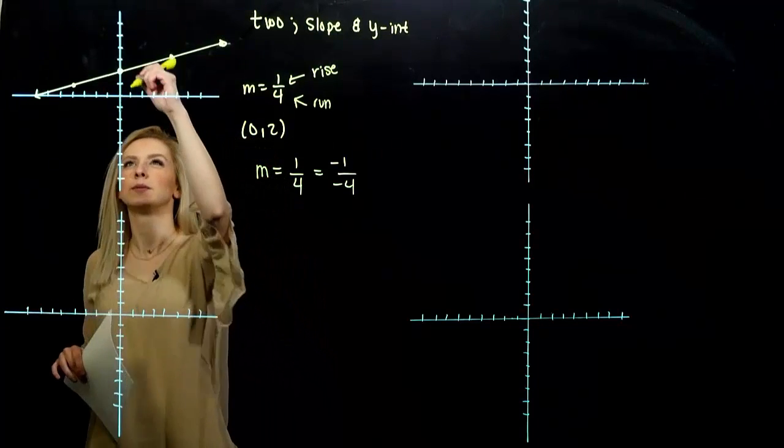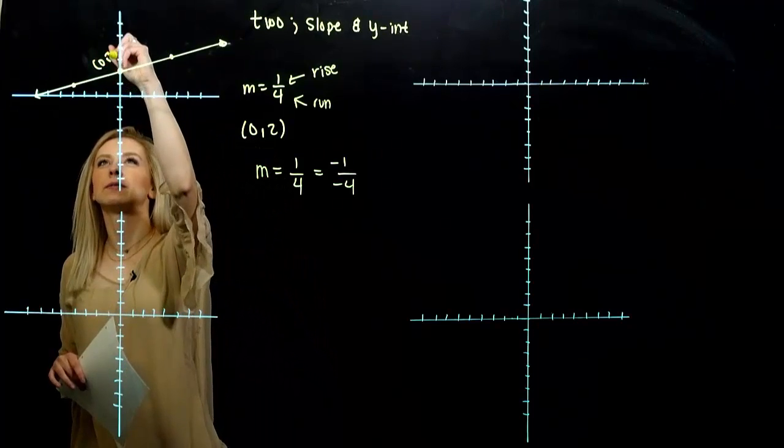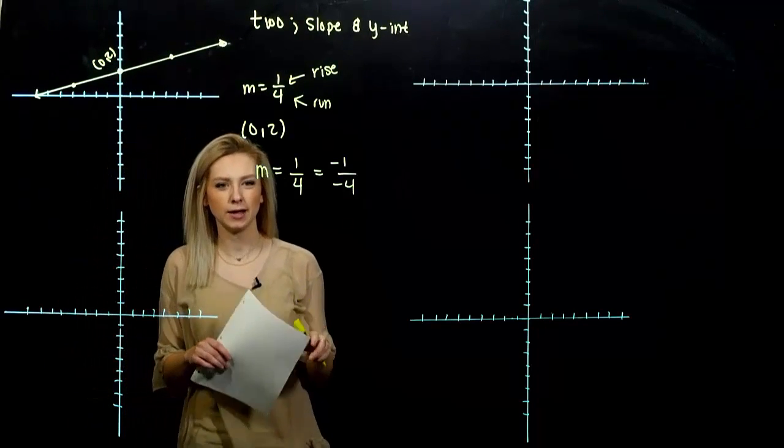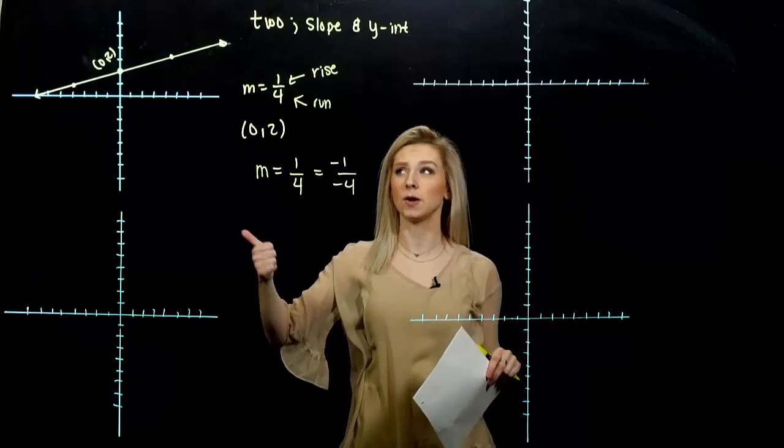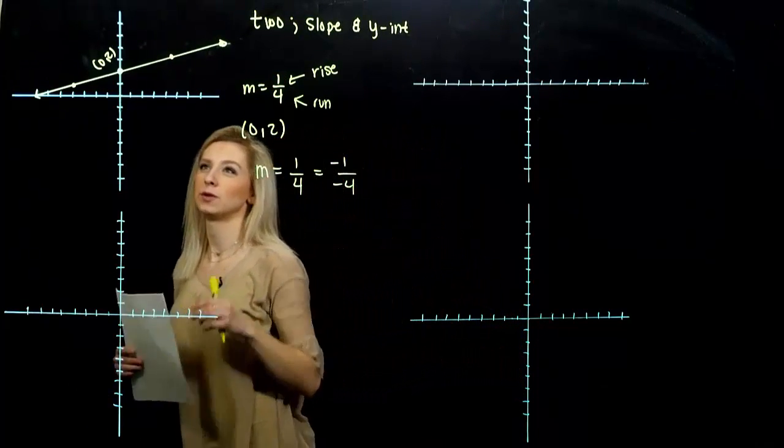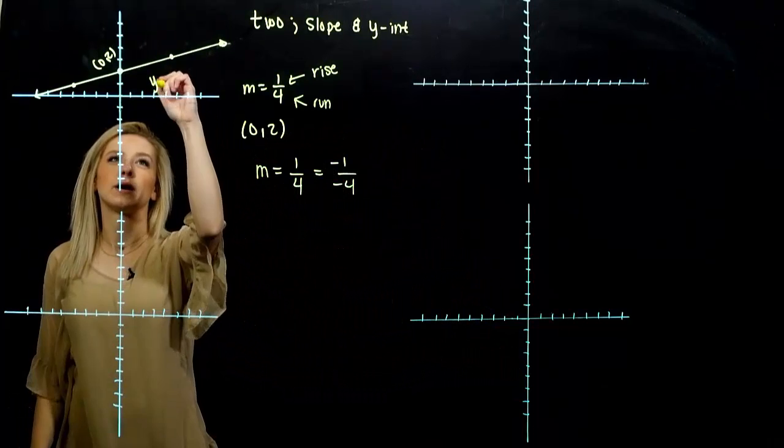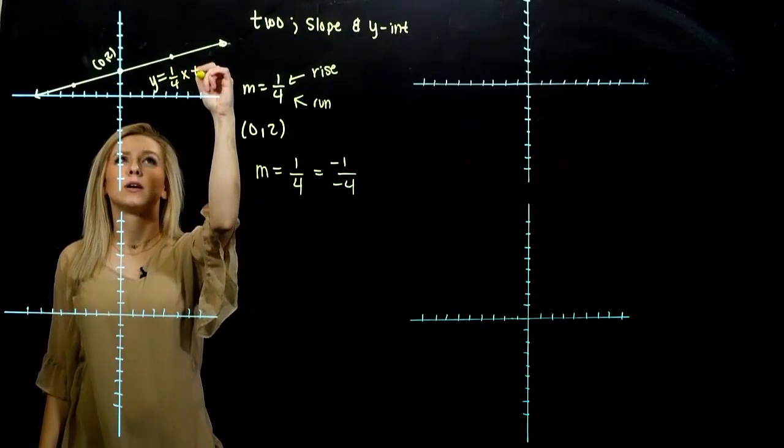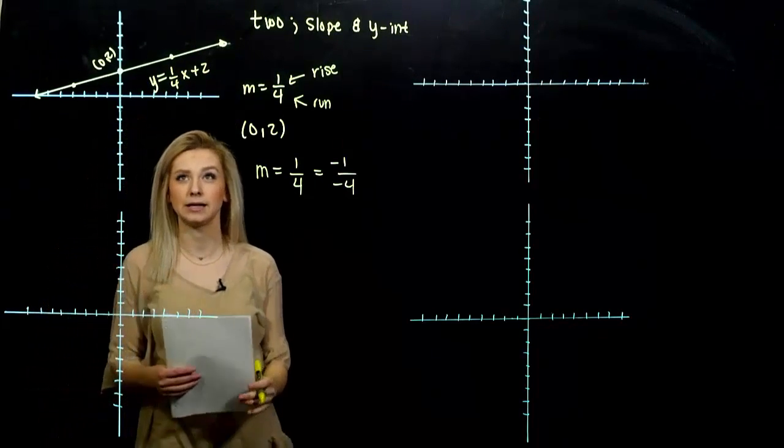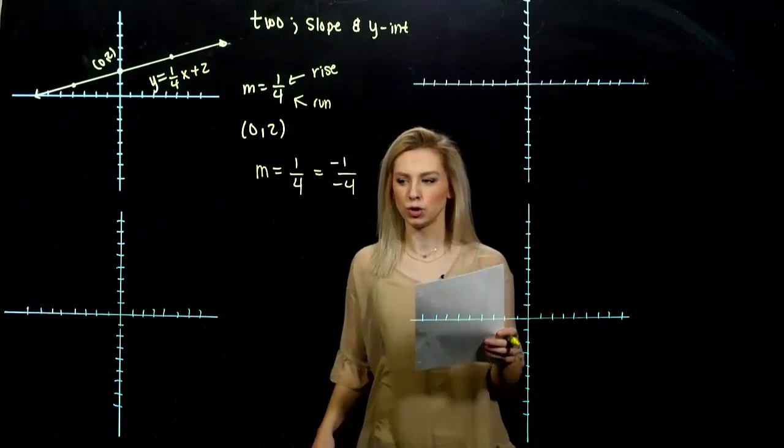As we connect those dots, we know where the y-intercept happened at. We'll just mark that again. And we can label this line. We know what the equation looks like, since we know the slope and the y-intercept. This line is y equals mx plus b, our y-intercept. So that line is one-fourth x plus two.